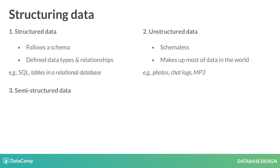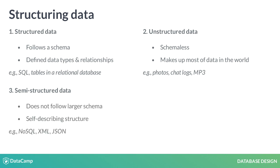The third is semi-structured data, which does not follow a larger schema. Rather, it has an ad hoc self-describing structure. Therefore, it has some structure. This is an inherently vague definition, as there can be a lot of variation between structured and unstructured data.